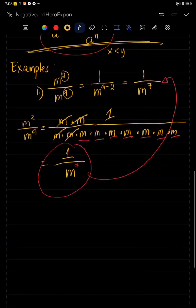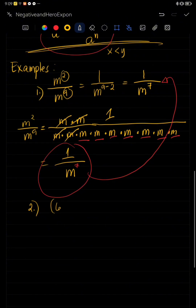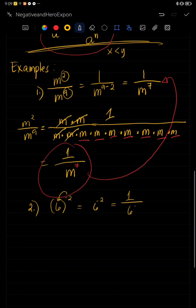Let's have another example. We have six raised to negative two. Since the exponent is negative two, we need to make it a denominator. So that is one over six squared, which is one over 36, because six times six is 36. So this is the final answer.